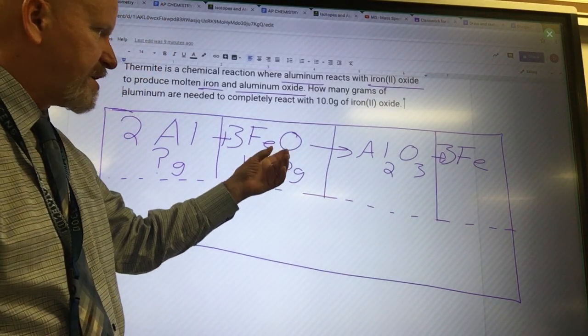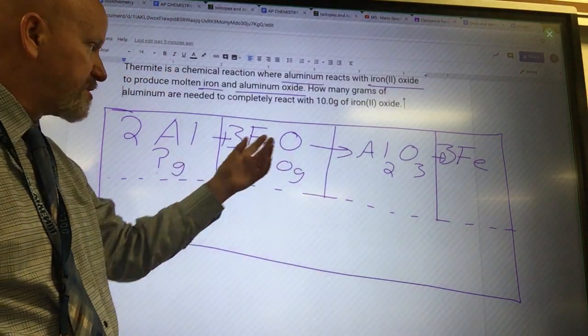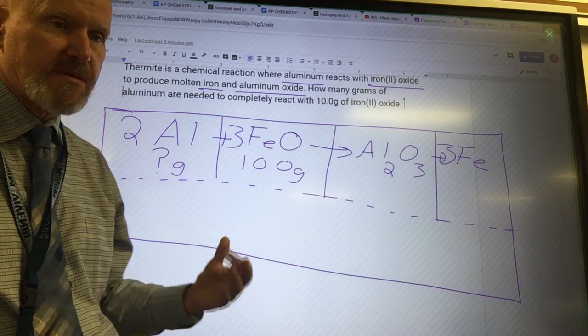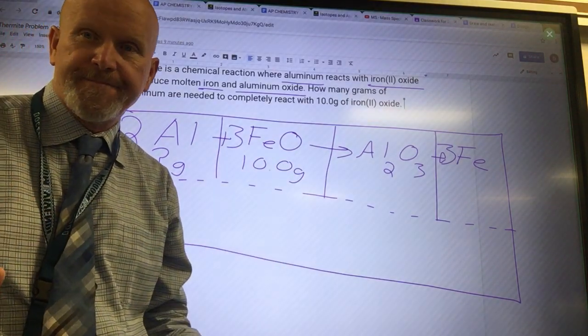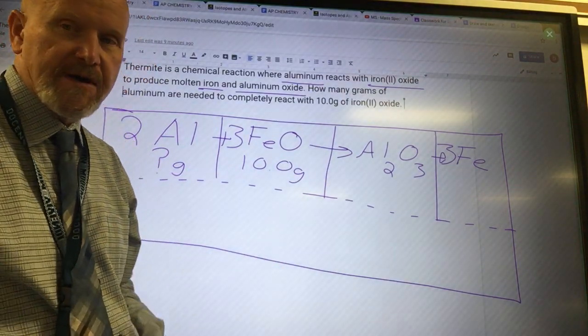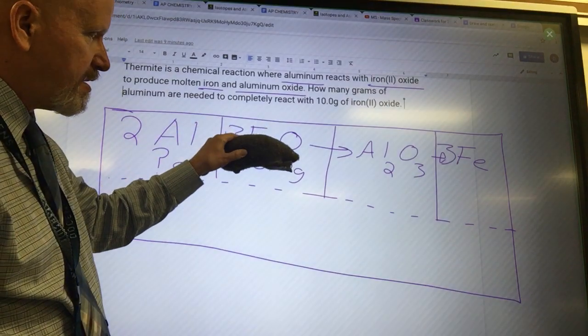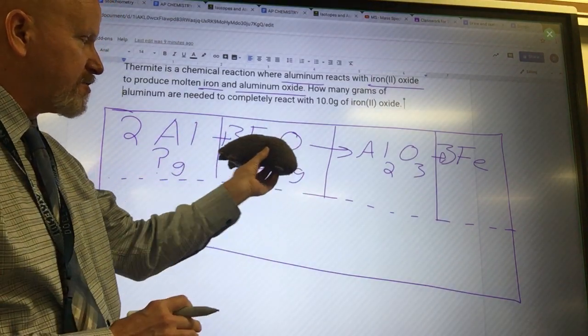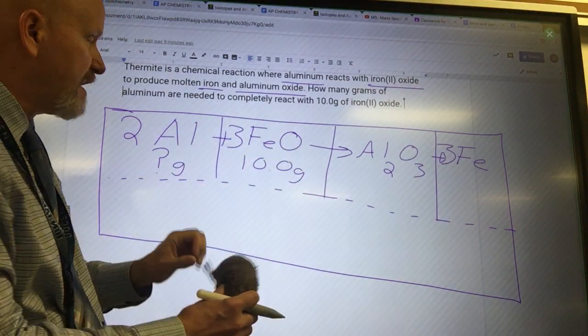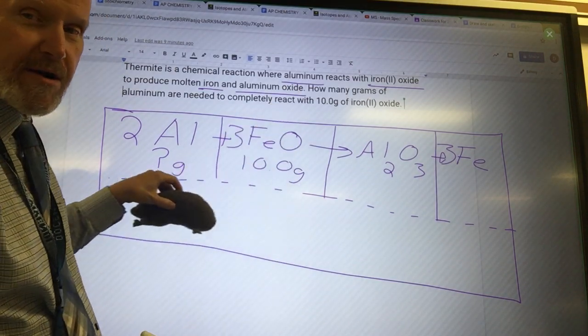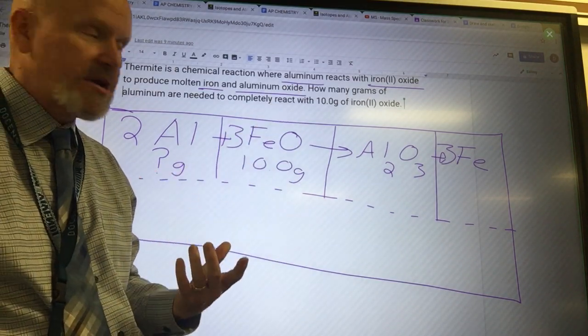So if it's 10 grams of iron oxide, I can just use my ratio. It's 3 to 2, so I'm going to have less aluminum. No, that's not how this works. What do we have to do? Okay, so I'm right here. I can't head over to the aluminum and say how much aluminum I have. I've got to get down into the mole layer. Then I can start using my ratio.